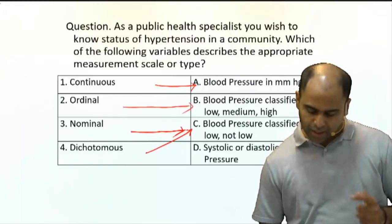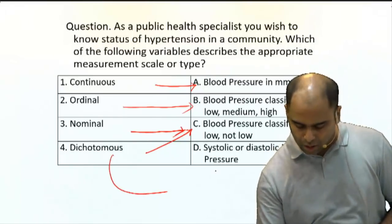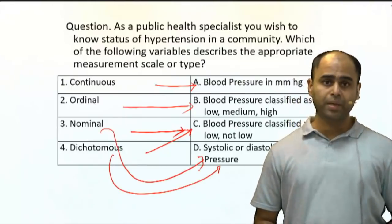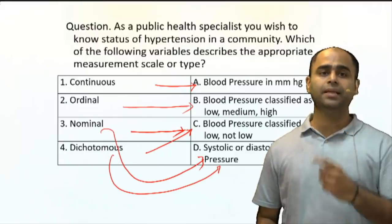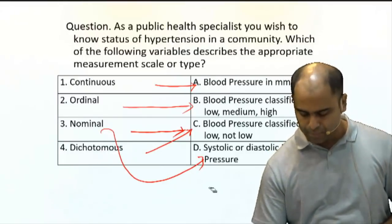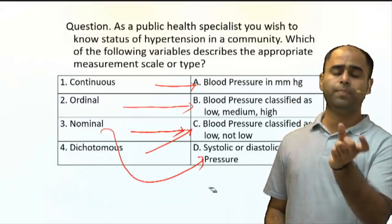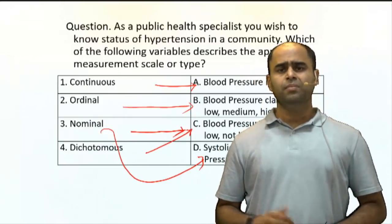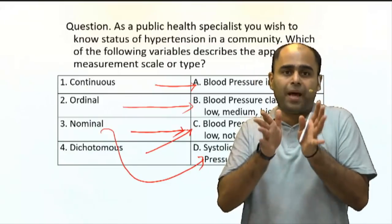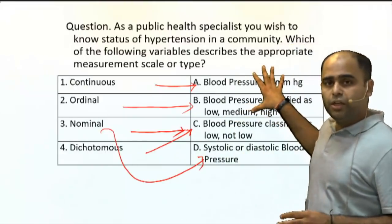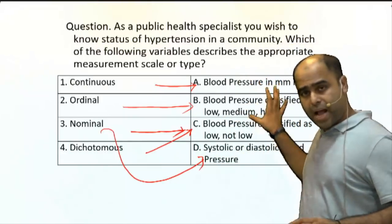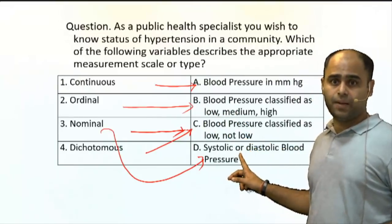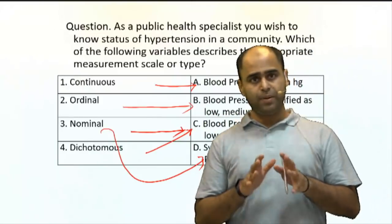Option 4 — systolic or diastolic BP — is again dichotomous and nominal. But if I have to give only a single answer, I would say nominal, because it is just a name: systolic BP versus diastolic BP. Generally it would not be called dichotomous because these are two different parameters. This is a new pattern of AIIMS exam — a match-the-table format where you can have multiple matches as well.